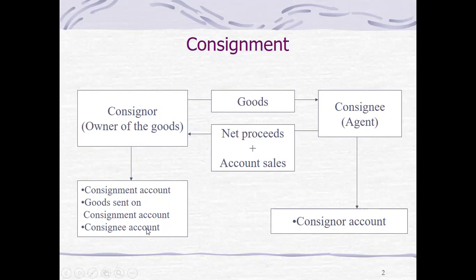The consignee account will be a receivable if the net proceeds is positive, meaning there is still a remittance that should be made by the consignee to the consignor. For the goods sent on consignment account, we have inventory on consignment and shipments to consignment if using the periodic inventory system. If using the perpetual inventory system, which is normally the case, we credit merchandise inventory and debit the consignment account — that is, inventory on consignment.